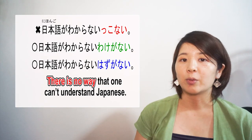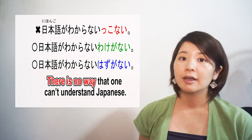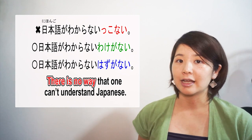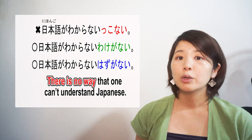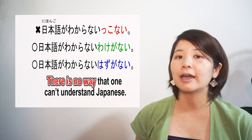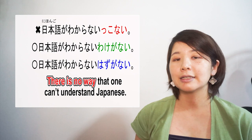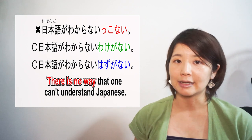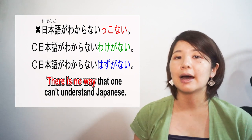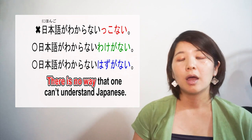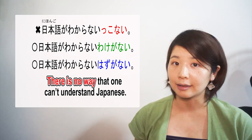So for example, 'there is no way that one can't understand Japanese.' Can't understand is wakaranai. We cannot say wakaranai konai. We will use hazu ga nai or wake ga nai instead: nihongo ga wakaranai hazu ga nai, or nihongo ga wakaranai wake ga nai.